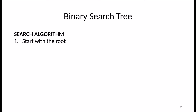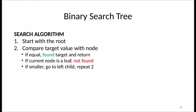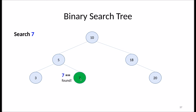Now let's look at the search algorithm. We start at the root node and compare the target value. If it's equal, we've found it. If the current node is a leaf, the value does not exist in the tree. If the target is smaller, we go left and repeat; if larger, we go right and repeat. For example, searching for 7 in a tree rooted at 10: 7 is smaller than 10, go left; 7 is larger than 5, go right; we compare to 7 and it is found. Searching is very similar to insertion.